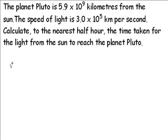The planet Pluto is 5.9 times 10 to the power 9 kilometres from the Sun. The speed of light is 3.0 times 10 to the power 5 kilometres per second. Calculate to the nearest half hour the time taken for the light from the Sun to reach the planet Pluto.